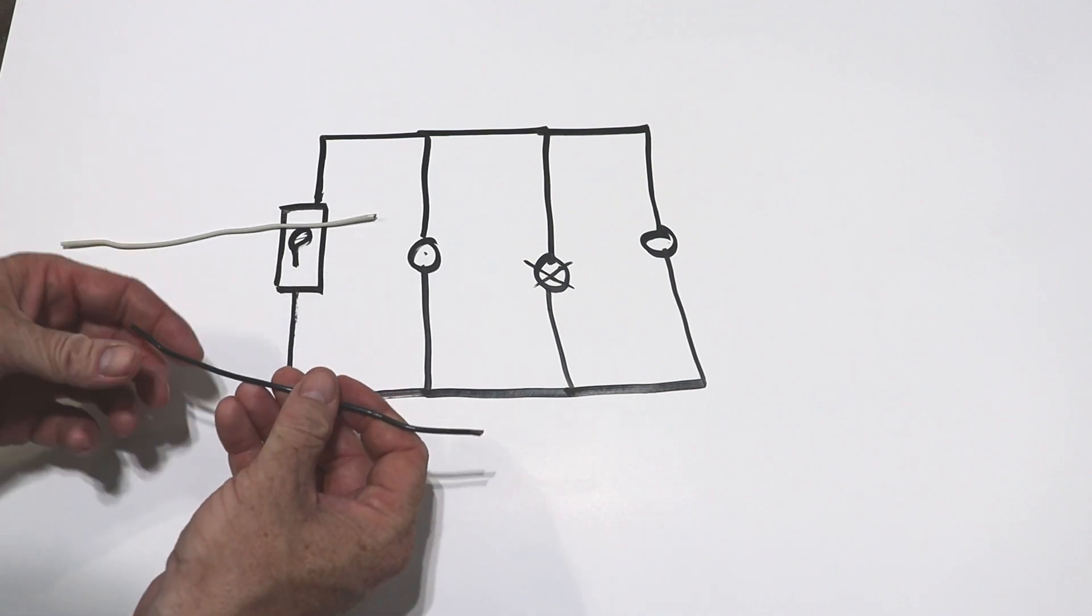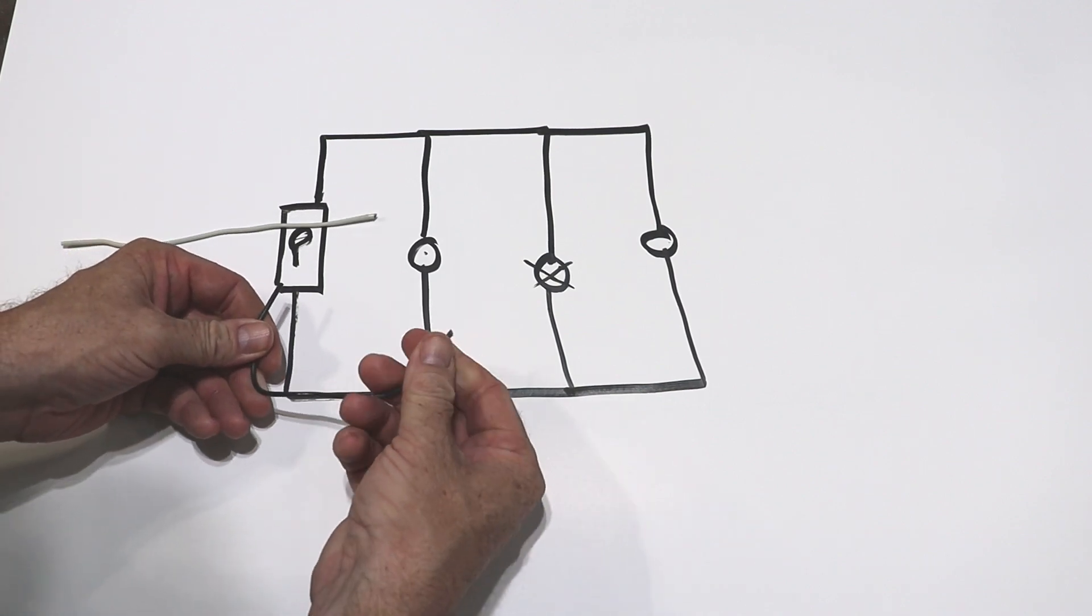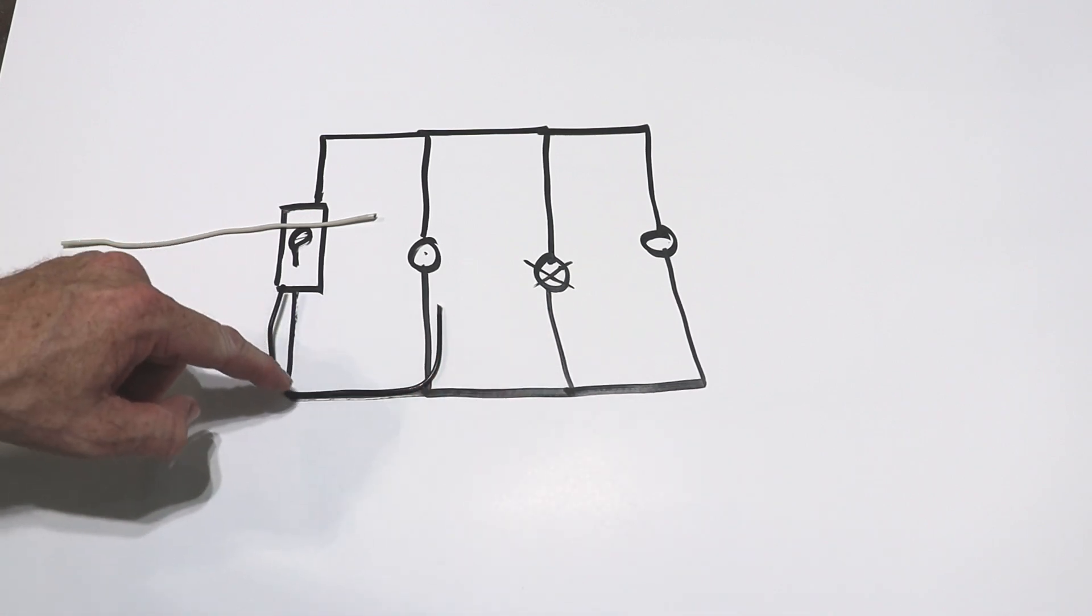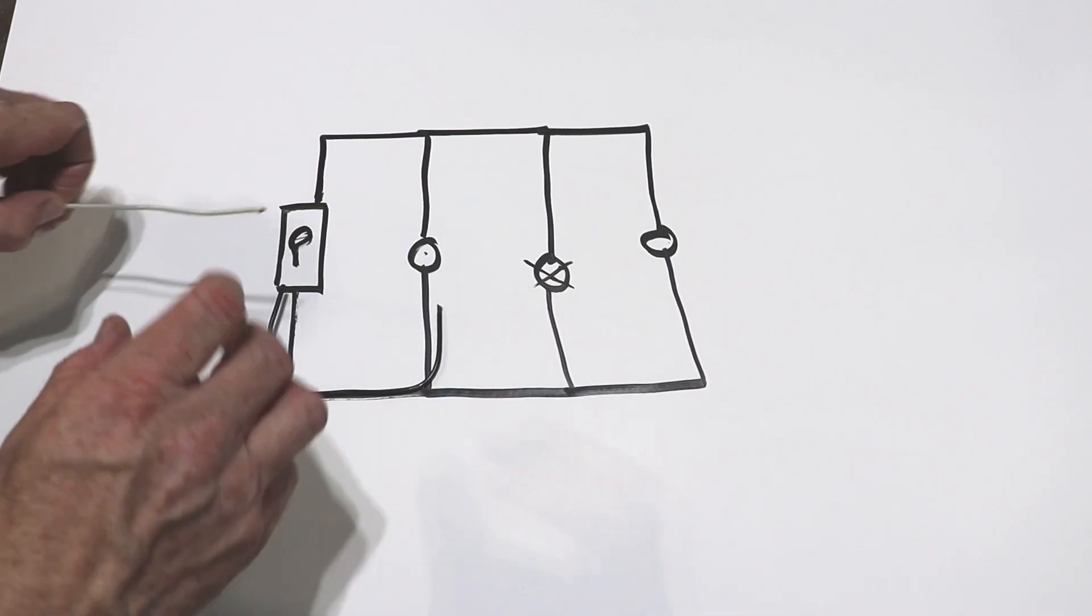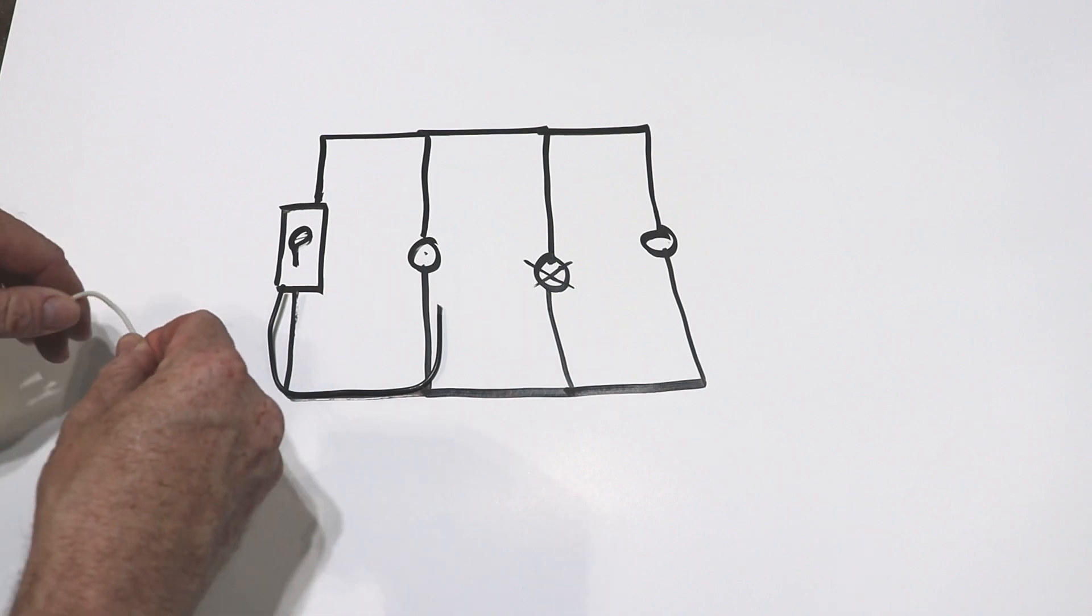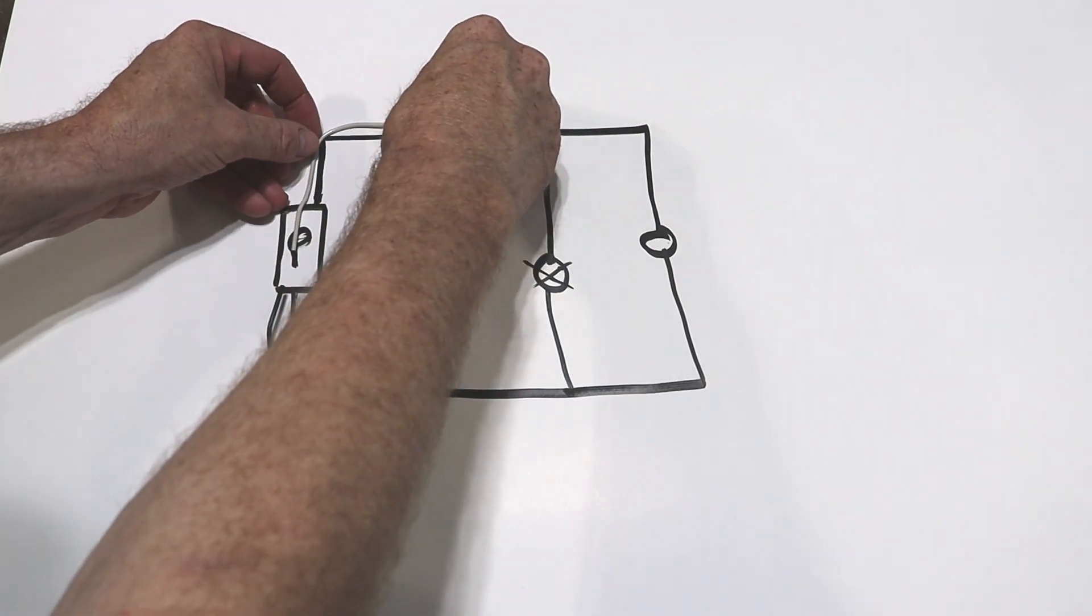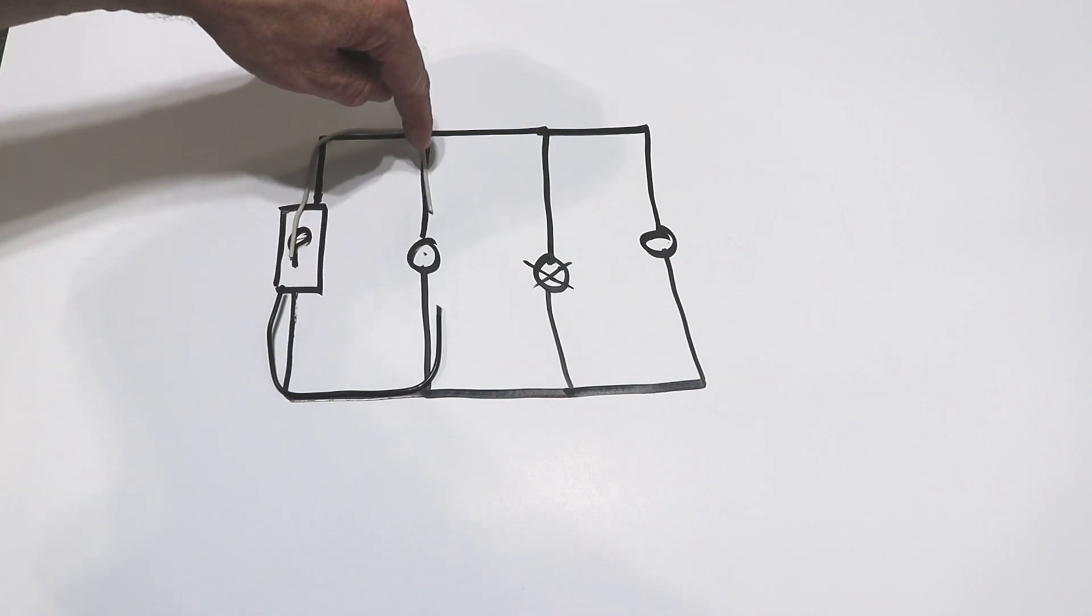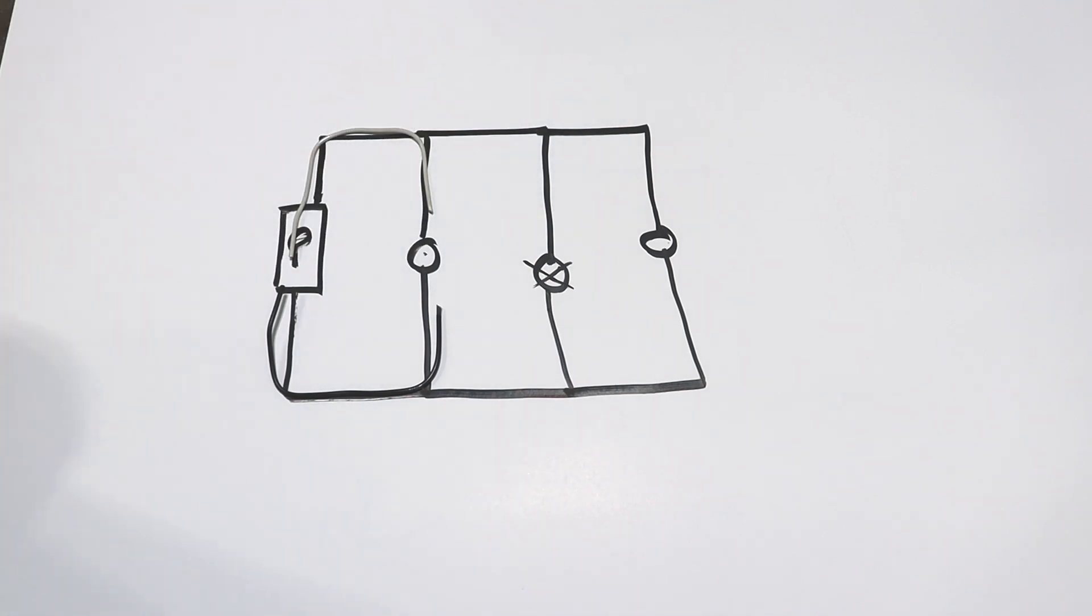So let's put it in terms of Romex wire. Essentially what you have is this would be your black wire providing the power up to the device. And then this would be your white neutral taking the power, or your current, from your device back to your panel box.